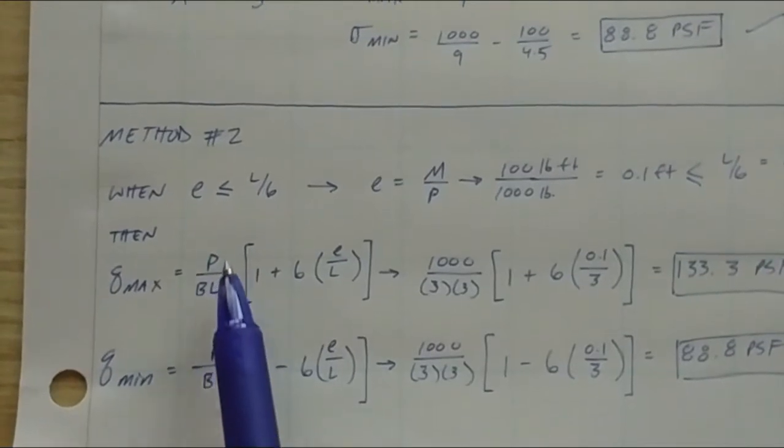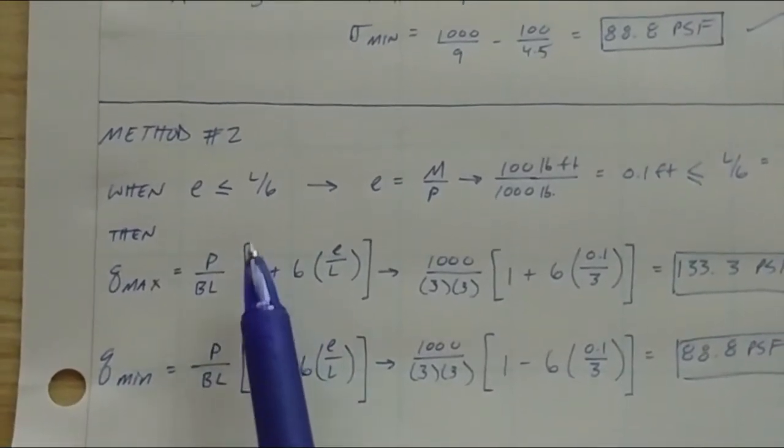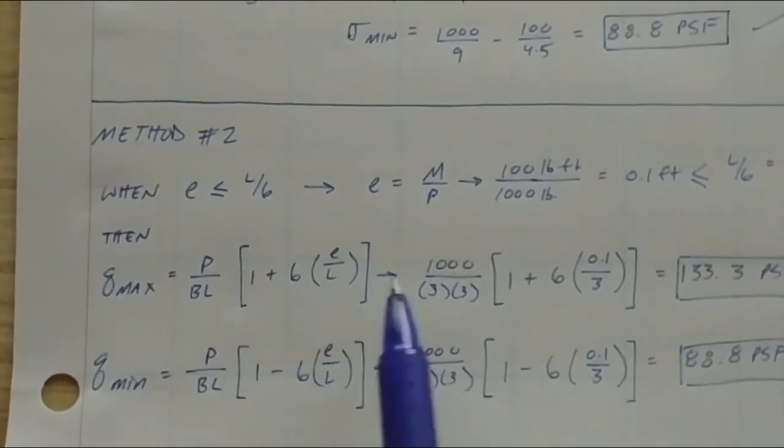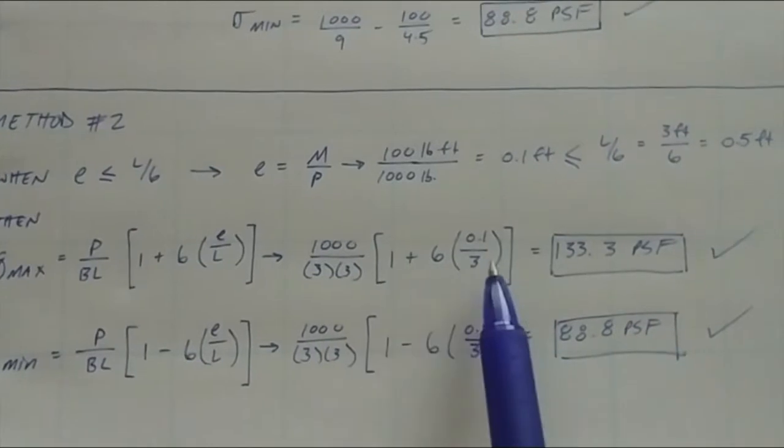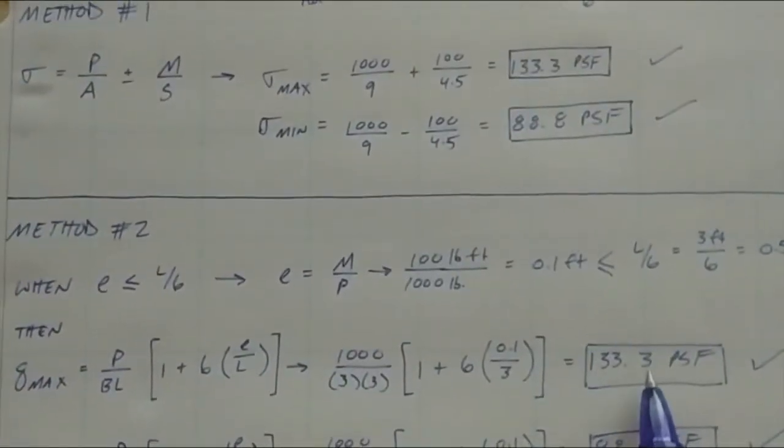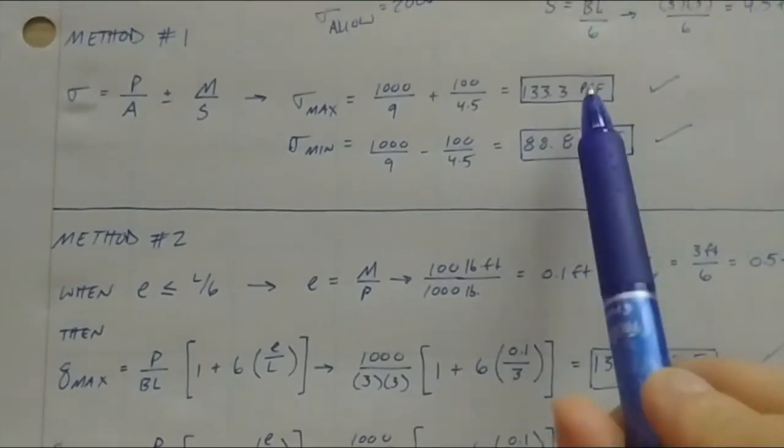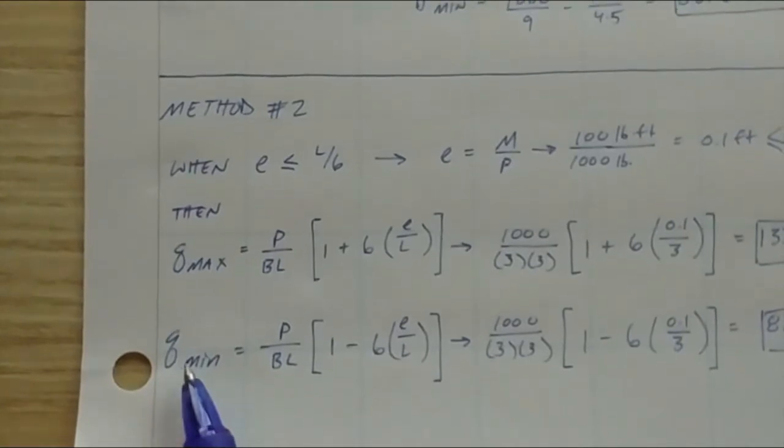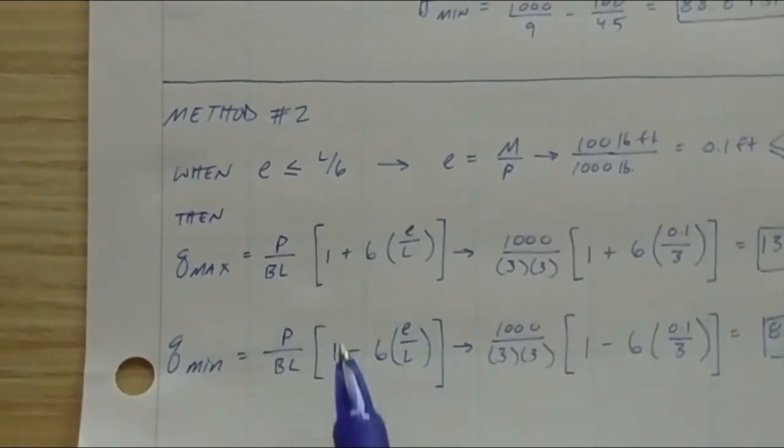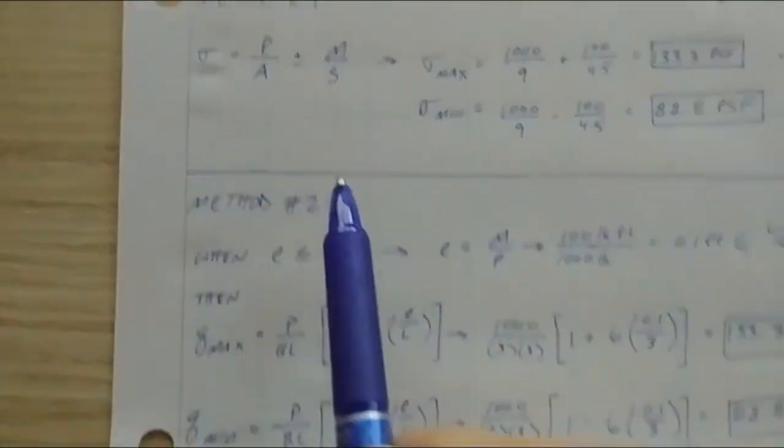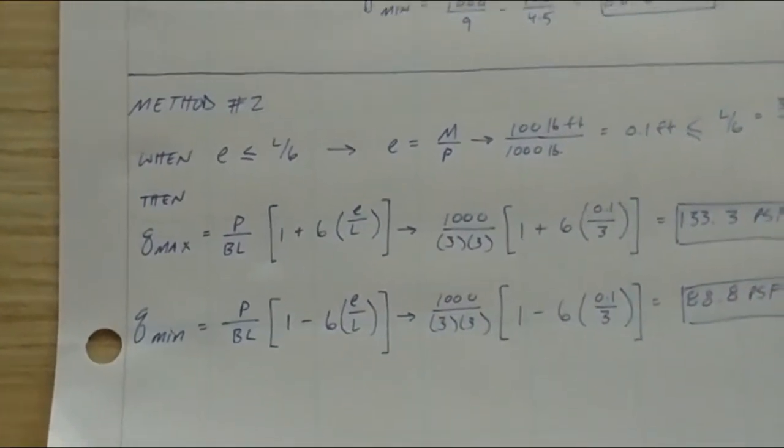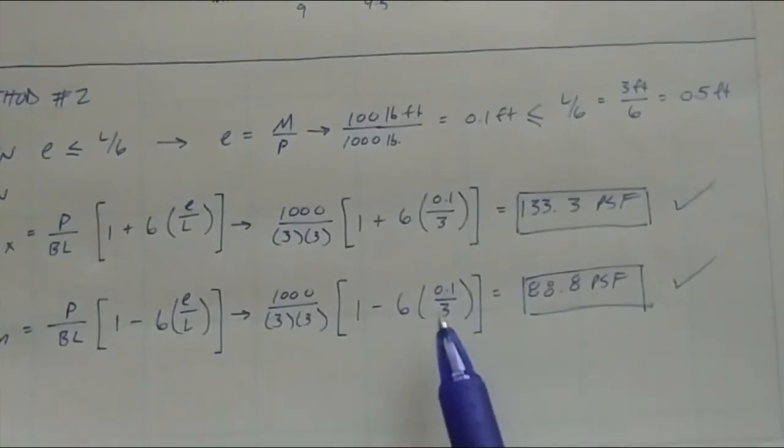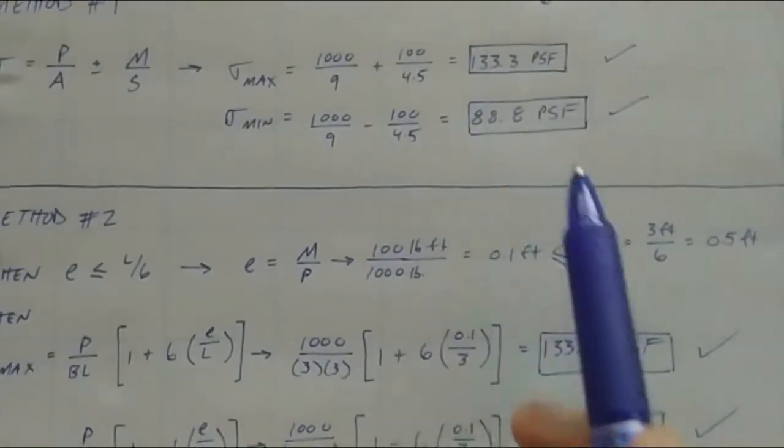That means we get to use this equation. Maximum bearing pressure, P over BL, parenthesis one plus six times parenthesis E over L. That breaks down into 133.3 PSF for max bearing pressure, the same as above. The difference in this equation when finding your minimum bearing pressure is replace the plus with a minus. Very similar to what we did above here, because they're derived from the same formulas. Run that out. Gets you 88.8 PSF, the same as above. Good.